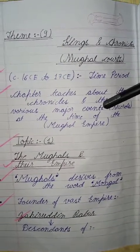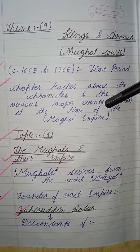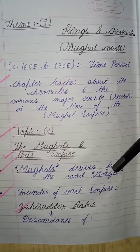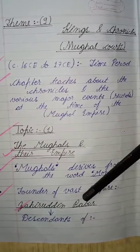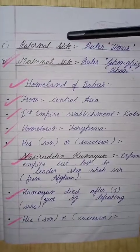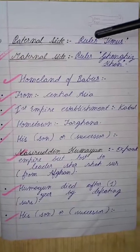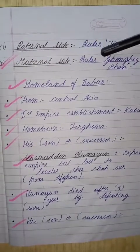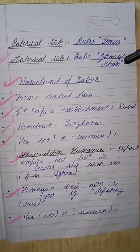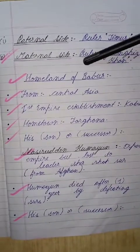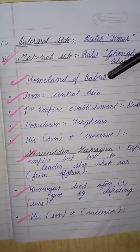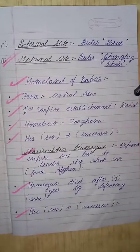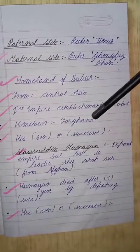Now we will move towards topic one: the Mughals and their empire. The word Mughal is derived from the word Mongol, and the founders of this empire were the descendants of Zahiruddin Babur. On the paternal side, Babur descended from ruler Timur, and on the maternal side from ruler Genghis Khan, also known as Changesh Khan. Babur was from Central Asia; his first empire establishment was Kabul and his hometown was known as Fargana.